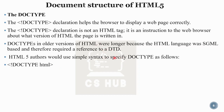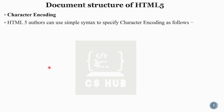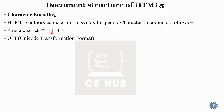In older versions, the DOCTYPE referenced a DTD and required many character references, so each version had a different DOCTYPE. In HTML5, authors can use simple syntax to specify character encoding: meta charset equal to UTF-8. UTF-8 stands for Unicode Transformation Format, which is the encoding scheme used.